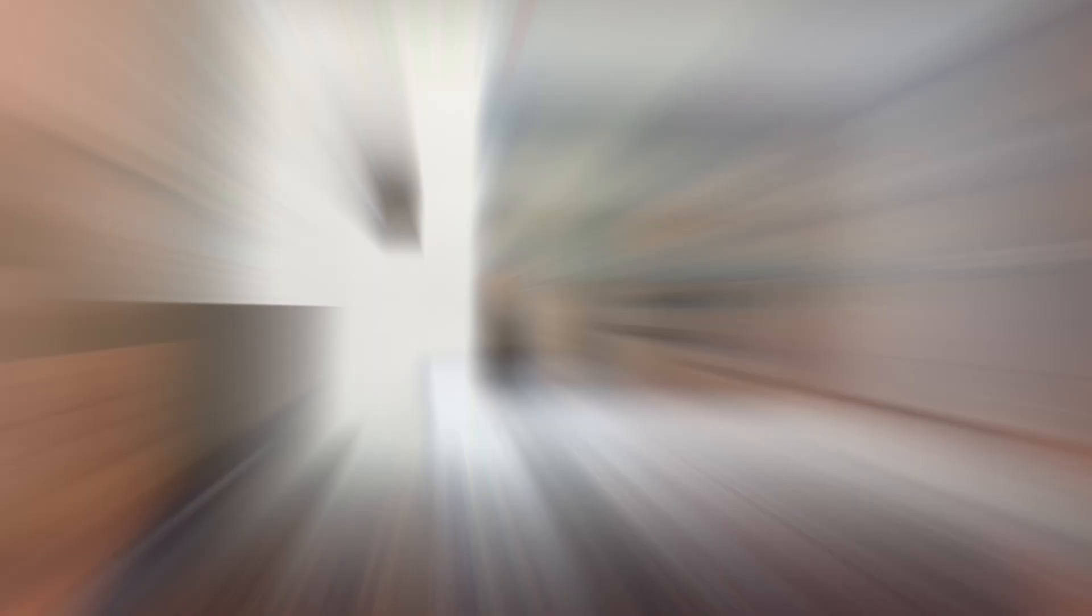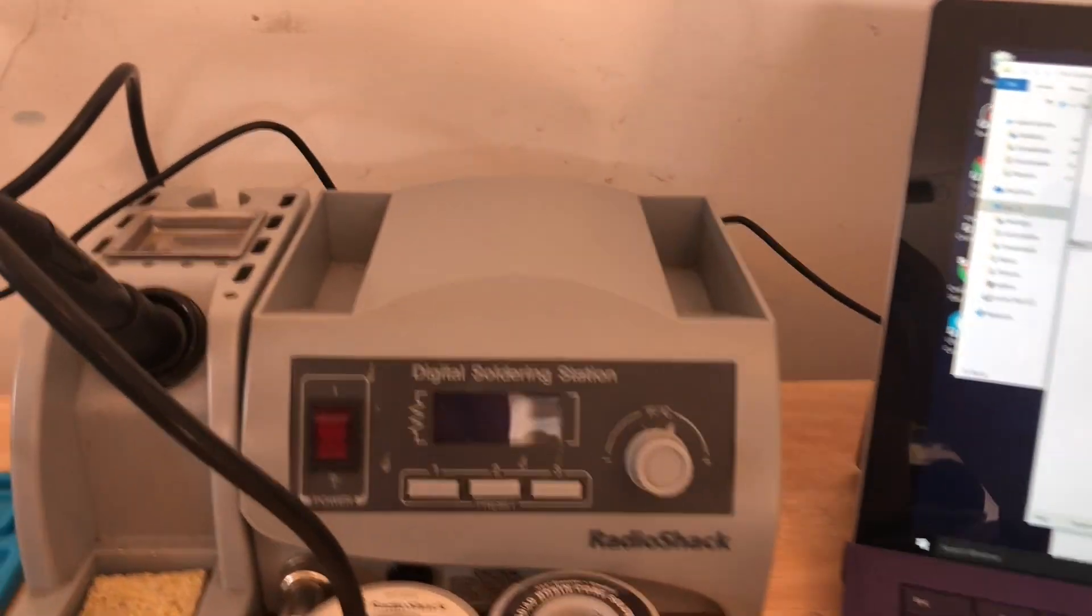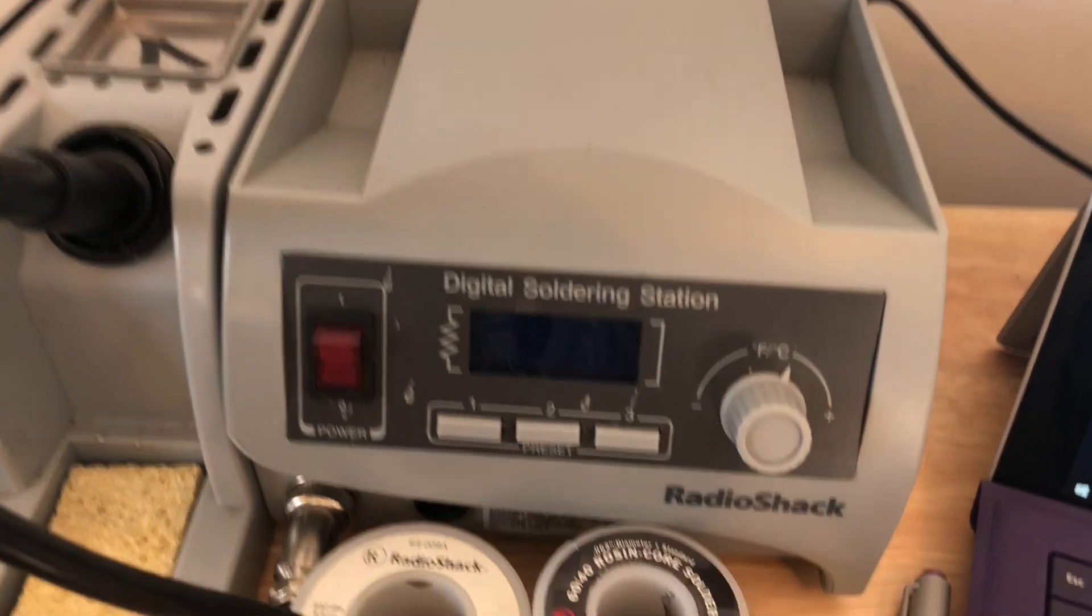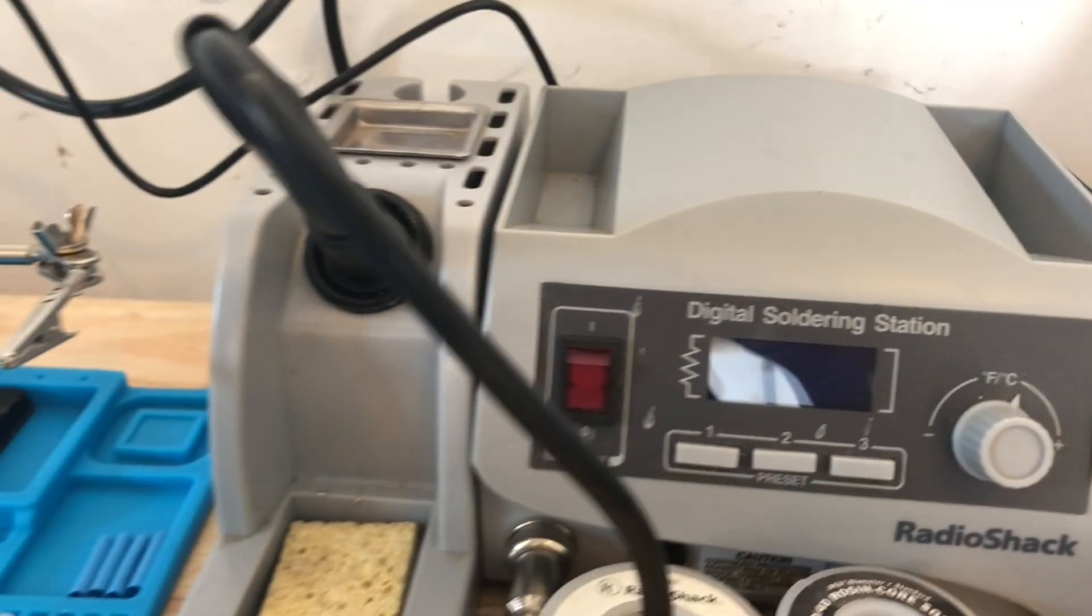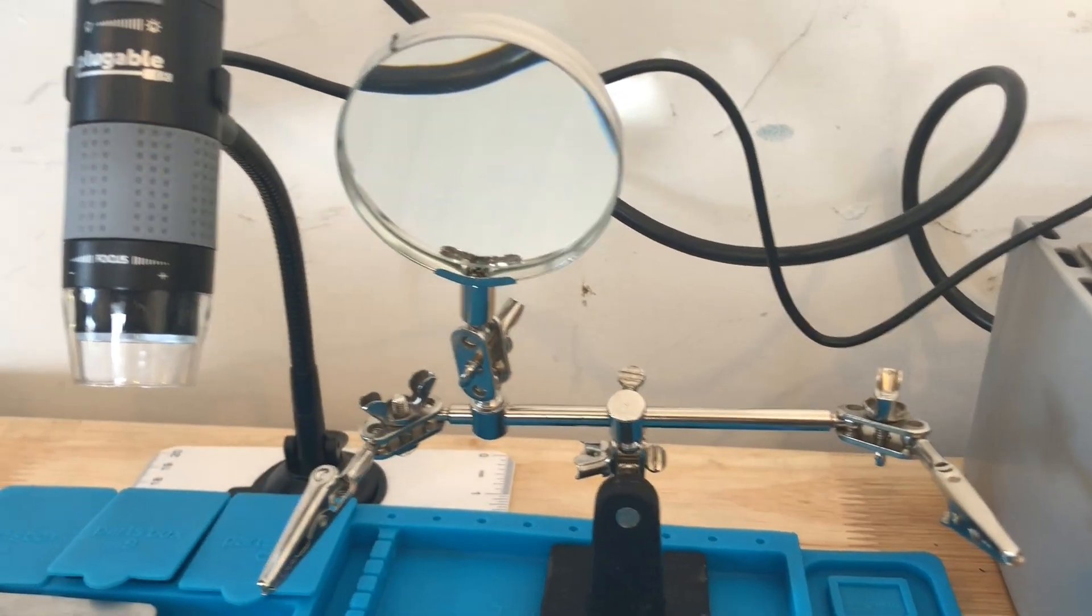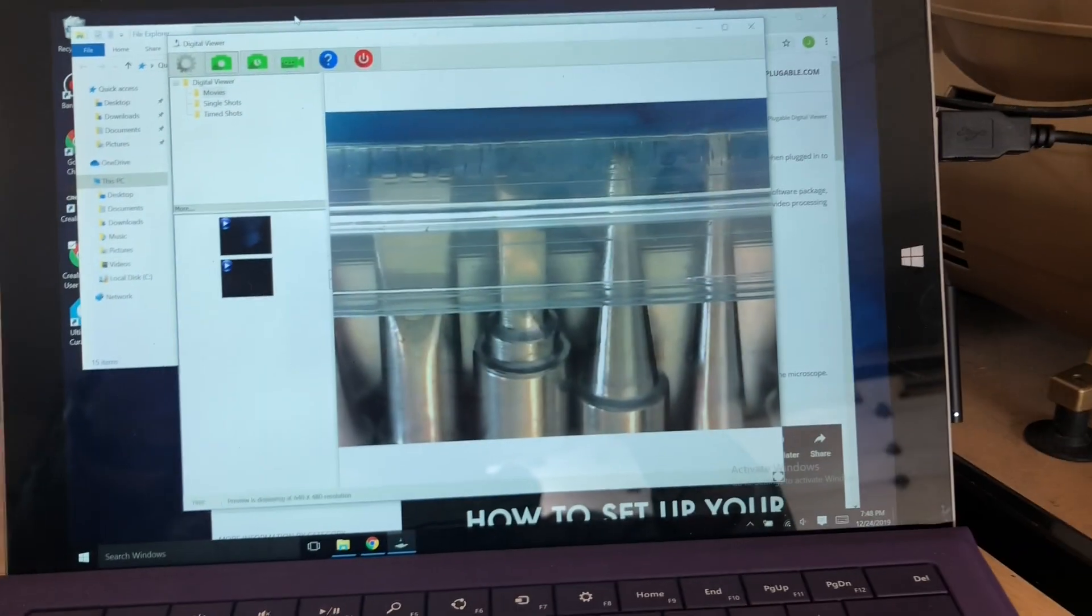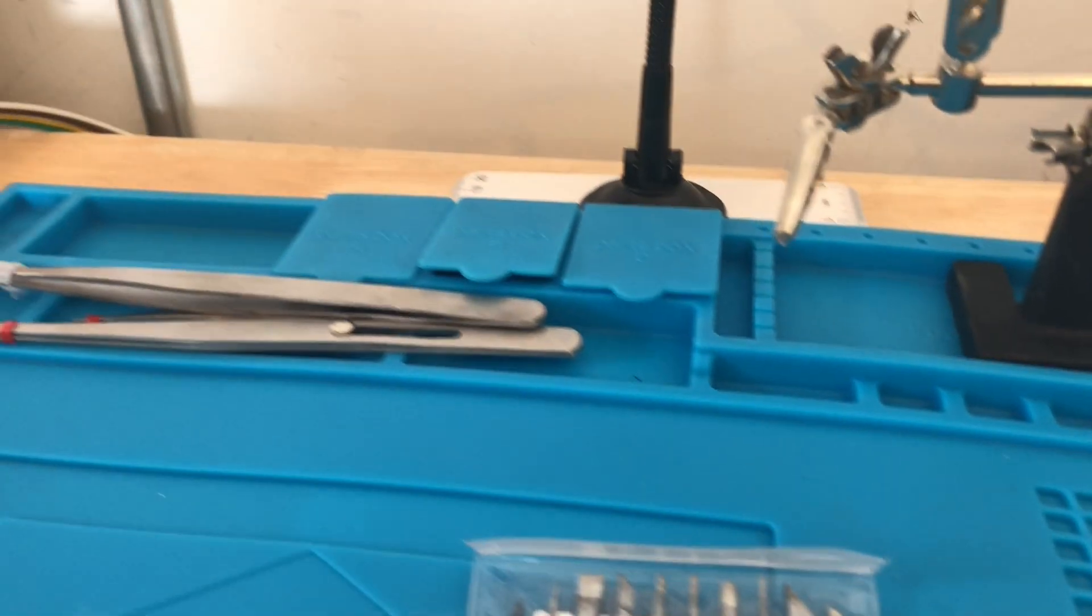All right. Let's jump to it and give you a rundown of what I have. All right. We have my Microsoft Surface, a Radio Shack solder station with Radio Shack solder. It's a 60-40 lead-based solder. We have the helping hands. We have the microscope. And we pan back. You'll see it's hooked up to the surface. And then we have various solder tips of sizes.